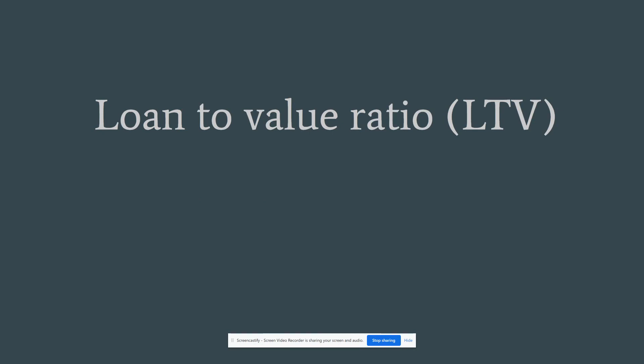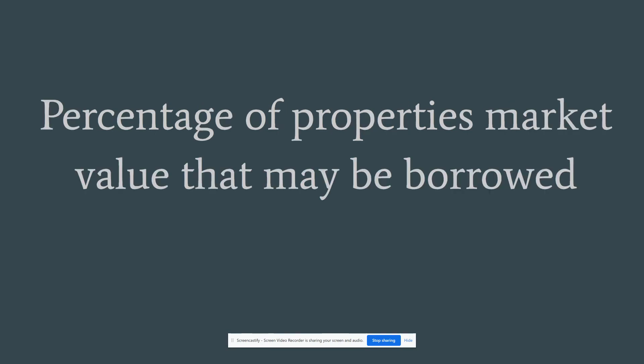Loan to value — also referred to as LTV. This is the percentage of the property's market value that may be borrowed. The loan-to-value amount dictates whether you need PMI. For conventional loans with an LTV greater than 80%, you're going to have to pay PMI — private mortgage insurance. It all depends on the value, which is typically based off an appraisal.